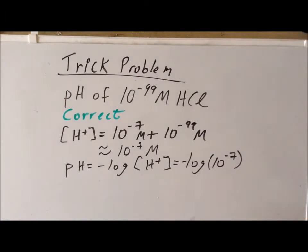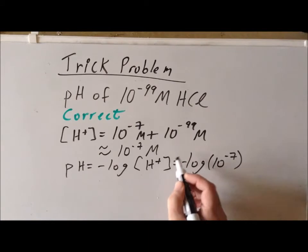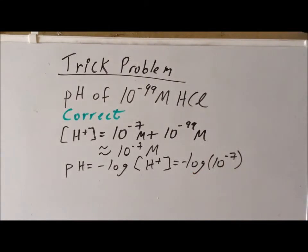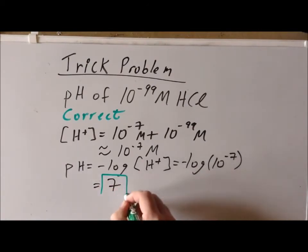Again, we can solve the log of a power of 10 by inspection. And we realize the log of 10 to the minus 7 is minus 7, multiplying by the leading negative sign. And then we get that the pH of the solution is going to be 7. This makes sense because 7 is the pH of a neutral solution, and there is so little acid in this solution that it is essentially pure water. So a pH of 7 is a reasonable answer for this particular problem.